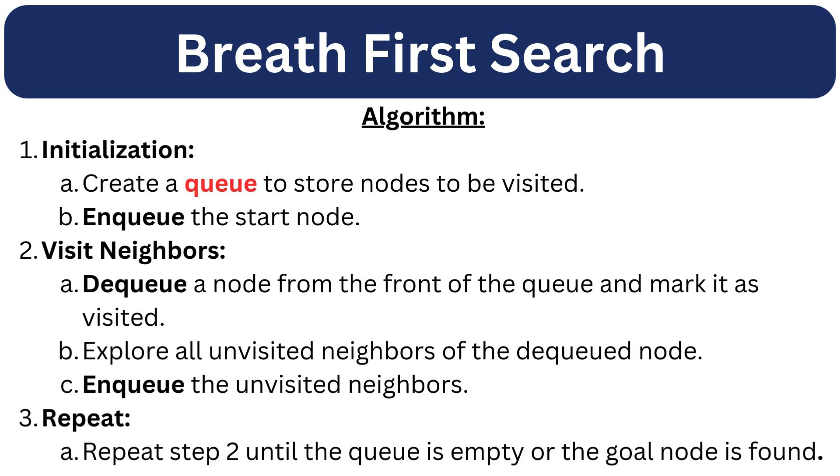Step 2: Visit neighbors. Dequeue a node from the front of the queue and mark it as visited. Explore all unvisited neighbors of the dequeued node. Enqueue the unvisited neighbors. We will repeat step number 2 until the queue is empty or the goal node is found.